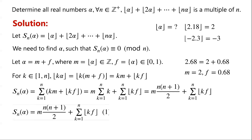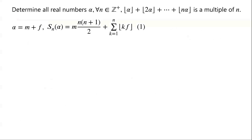So S_n(α) equals m·n(n+1)/2 plus the sum from k=1 to n of floor(kf). Now we want to find m and f such that S_n(α) is congruent to 0 modulo n. We divide the problem into two cases: f = 0, or f ≠ 0.